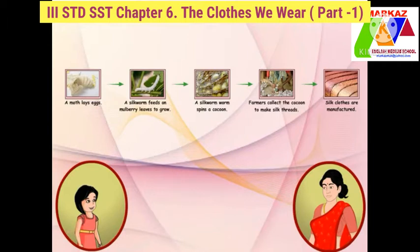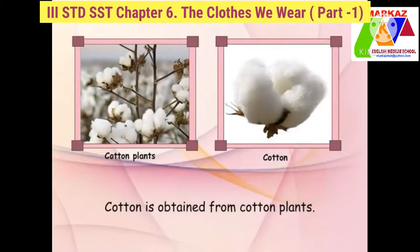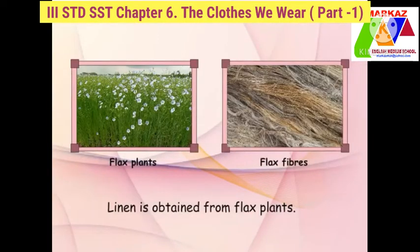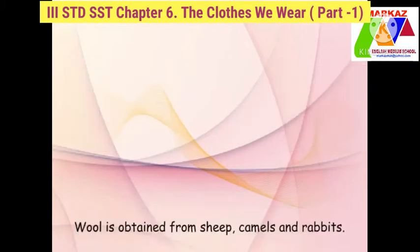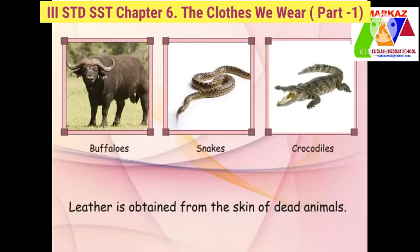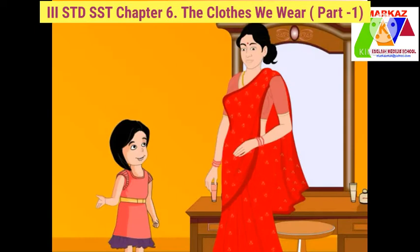I think I'm going to use this information for my school project. What about the dress I'm wearing — how do we get this type of cloth? The dress you are wearing is made of cotton, and cotton is obtained from cotton plants. We get different types of clothes from both plants and animals. For example, linen and wool are obtained from sheep, camels, and rabbits. Leather is obtained from the skin of dead animals, and rubber is collected from rubber plants.